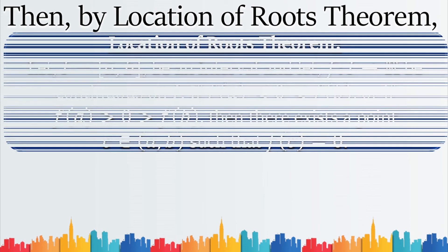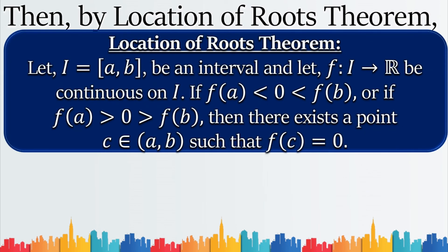Now let's recall the Location of Roots Theorem, which helps us proceed further. It states: let I be a closed interval and let F be a function defined from I to the set of real numbers, continuous on I. If F(a) is less than zero which is less than F(b), or if F(a) is greater than zero which is greater than F(b), then there exists a point C belonging to the open interval I such that F(C) equals zero.